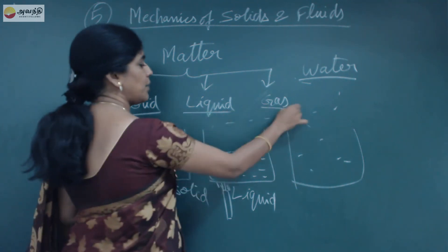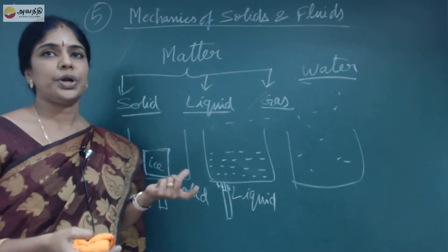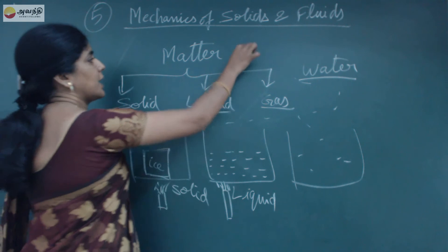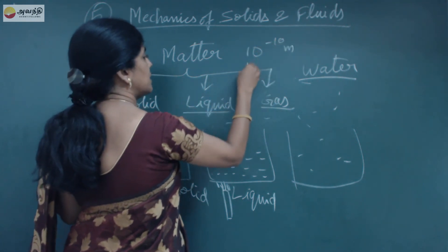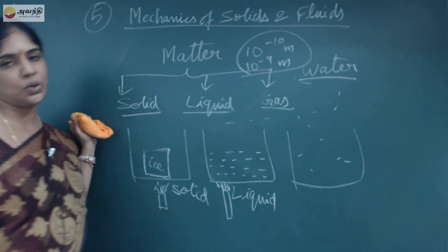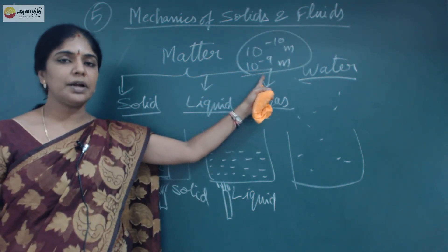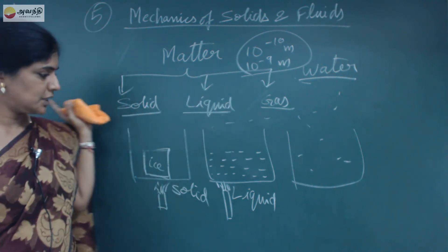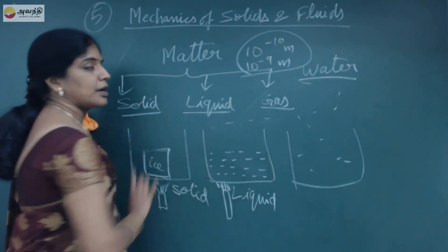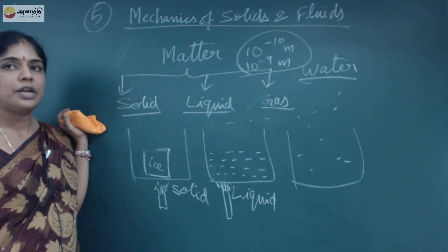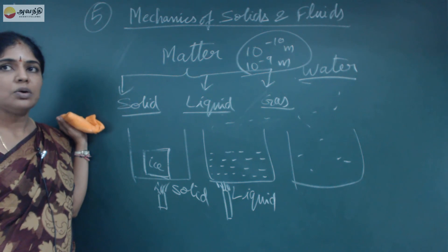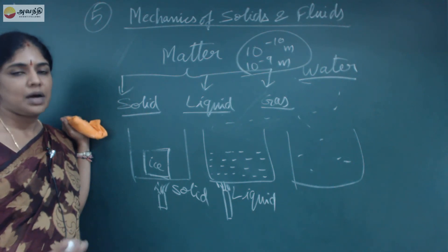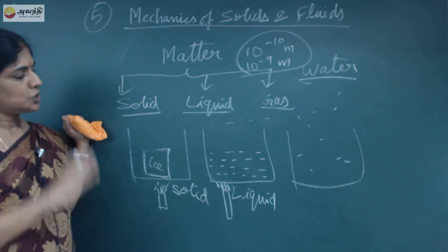The inter-atomic distance for solids is on the order of 10⁻¹⁰ meters, and the inter-molecular distance is on the order of 10⁻⁹ meters. This is the inter-atomic and inter-molecular distance for solids and liquids. Based on this, we have classified matter as solid, liquid, and gases.